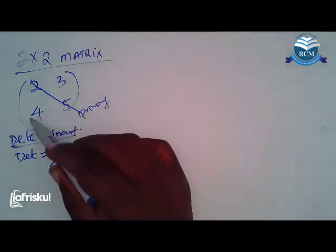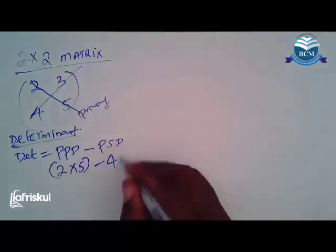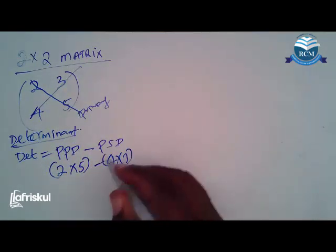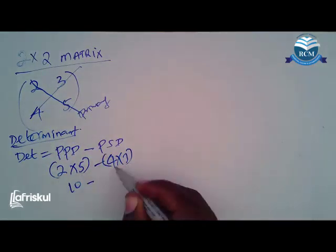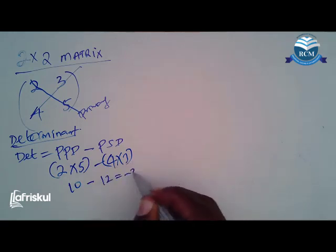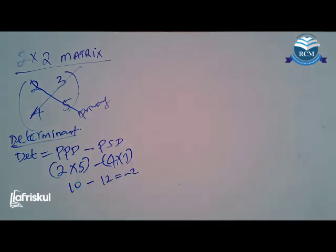Minus the secondary one, which is also known as the lagging one, will be 4 times 3. So in this case here, 2 by 5 is 10, minus 4 by 3 is 12. This gives us minus 2. Now, that is step number one.